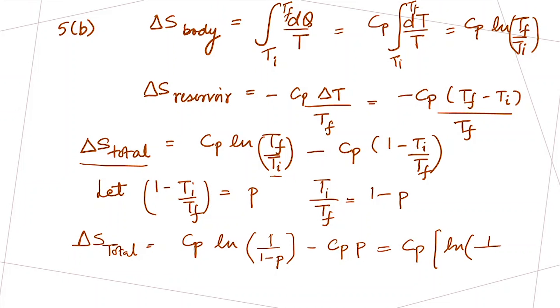We are left with 1 over (1 minus P) minus P. So delta S total over CP equals log (1 over (1 minus P)) minus P.